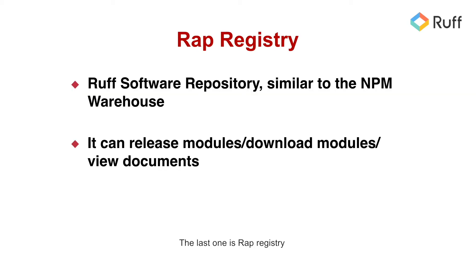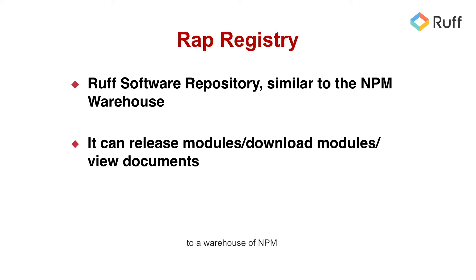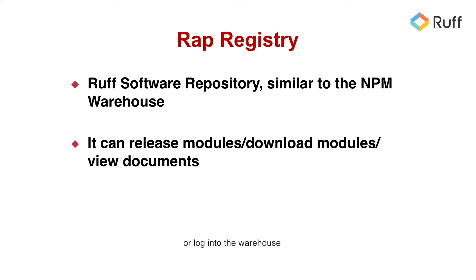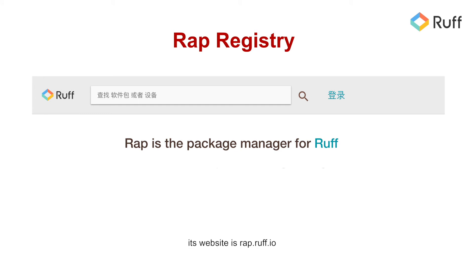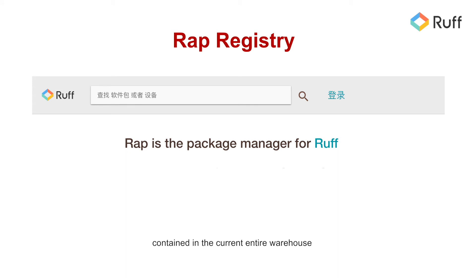The last one is RAP registry. It is a software repository of RUF. If any audience has heard about npm, we may analogize it to a warehouse of NPM. In this warehouse, you may download your desired modules or look into the warehouse and view some of its corresponding documents. Besides, you may use the RUF tools to publish some modules you have developed. As for RAP registry, its website is rap.ruf.io. Here you can view some modules and their corresponding documents contained in the current entire warehouse.